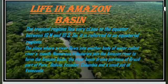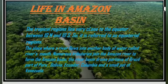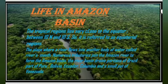Life in the Amazon Basin. The tropical region lies very close to the equator, between 10 degrees north and 10 degrees south, so it is referred to as equatorial regions. The place where a river flows into another body of water is called the river's mouth. Numerous tributaries join the Amazon River to form the Amazon Basin. The river basin drains portions of Brazil, part of Peru, Bolivia, Ecuador, Colombia, and a small part of Venezuela.